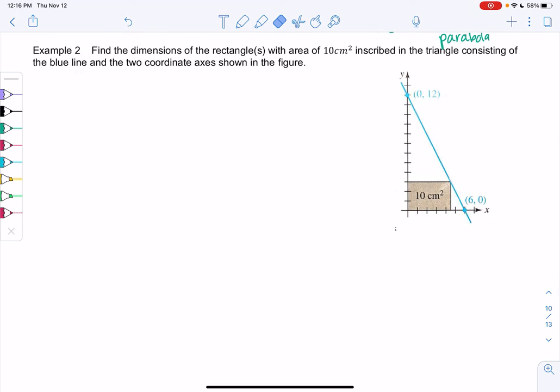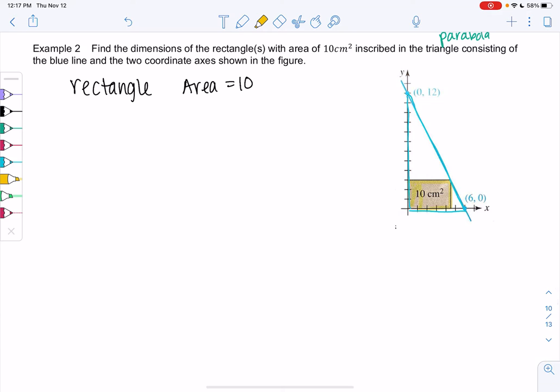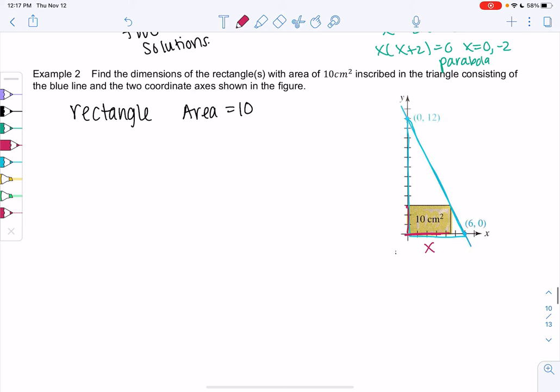So we want to find the dimensions of a rectangle with an area of 10 centimeters squared. So we have a rectangle that has an area equal to 10. And it's inscribed in a triangle from the blue line. So the blue line makes a triangle with the x and y-axis. And we want to find the dimensions of the rectangle. So the rectangle looks like the dimensions would be x, y because we'll go x and y.